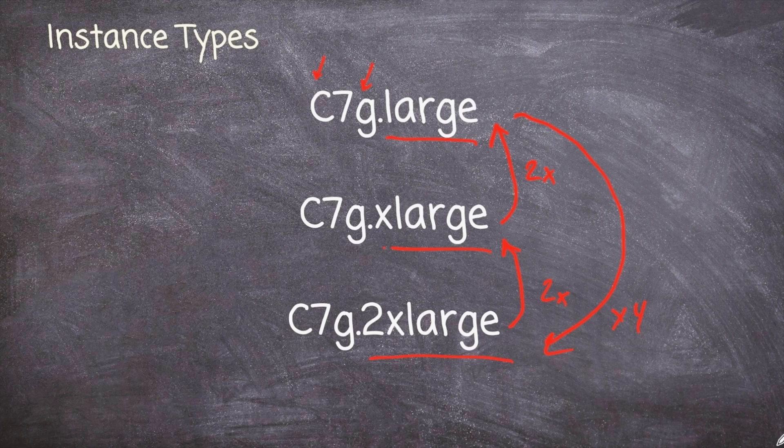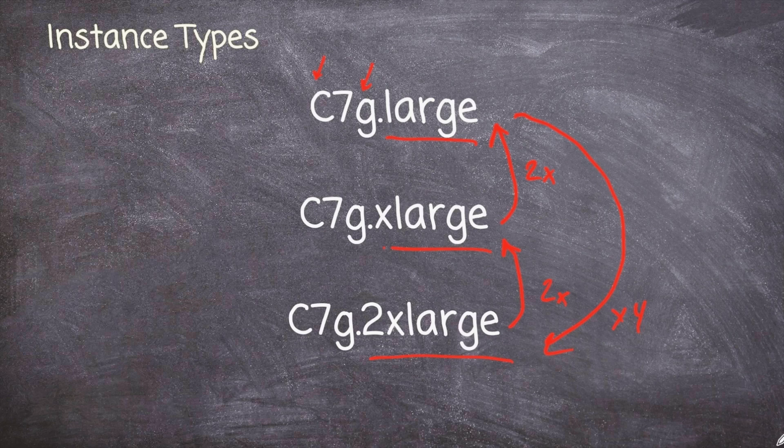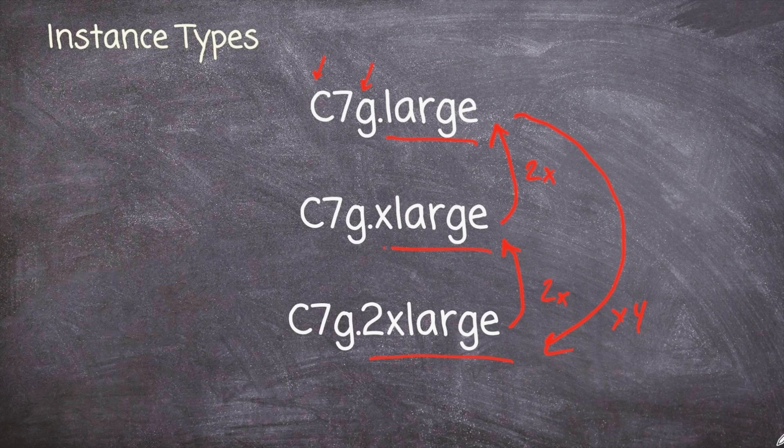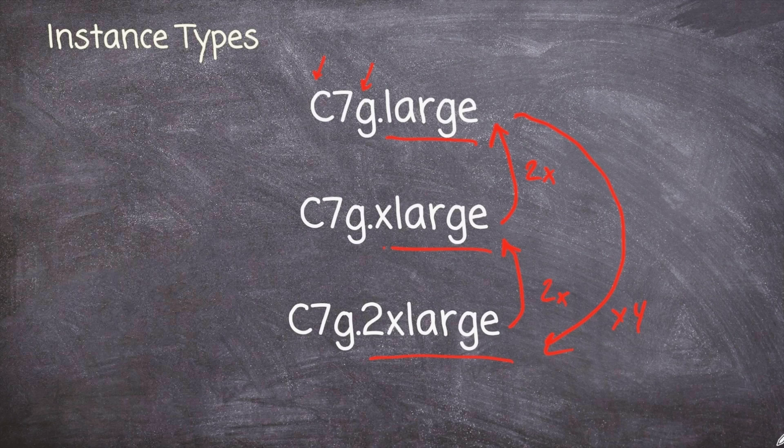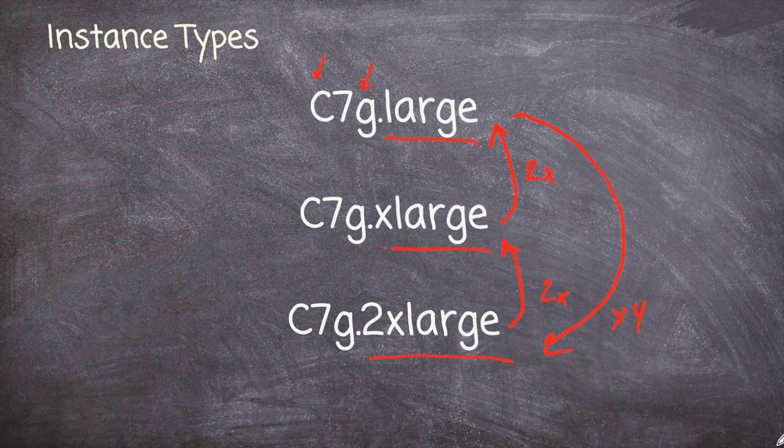Now, what does this mean? Well, that just means that it has four times as much memory and probably four times as much virtual CPU. Now, it varies slightly because some instance types are memory optimized. Some are compute optimized. Again, you don't have to worry too much about memorizing all this stuff. I just wanted to explain this naming construct so that when you see it in the wild, then you will kind of understand what it's saying there.